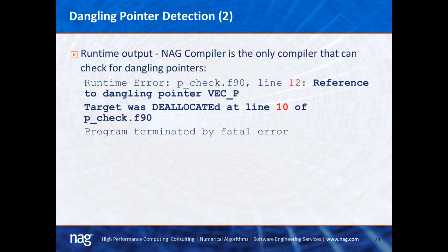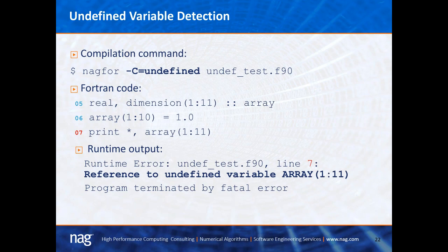The next check is for undefined variable usage. On line 5, an array of size 1 to 11 is declared. On line 6, only the first 10 elements are assigned, whereas on line 7 all 11 are printed — so the 11th element is undefined. The output when running this code says: 'runtime error line 7, reference to an undefined variable array.' It also tells you in which file the error occurred if you have many files.